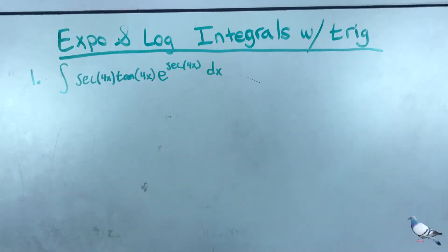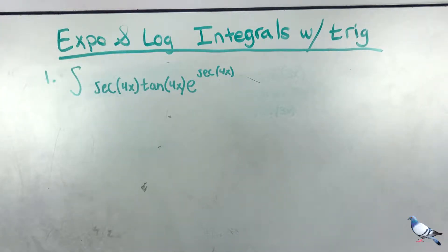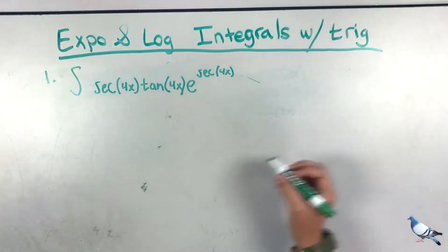Exponential and log integrals with trig. For the first problem, we have the integral of secant(4x) times tangent(4x) multiplied by e to the secant(4x).